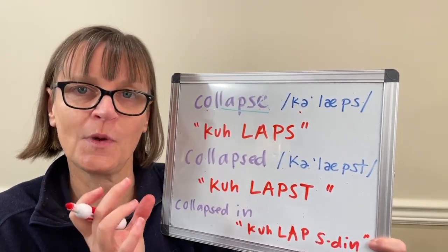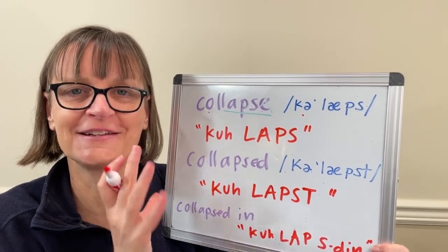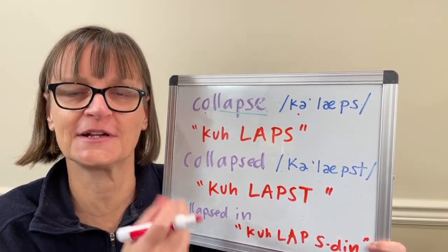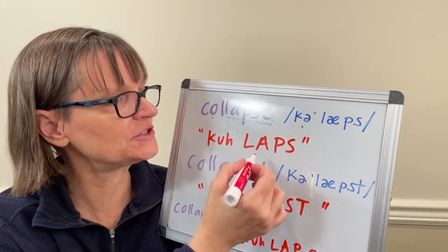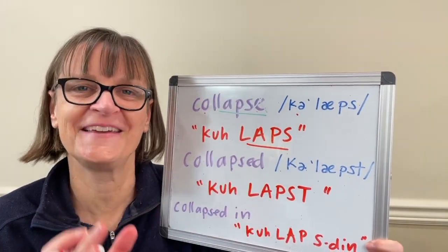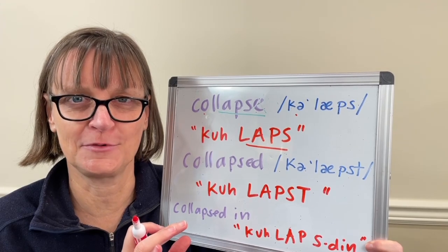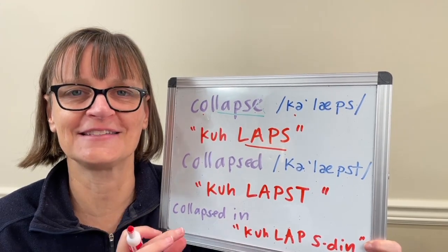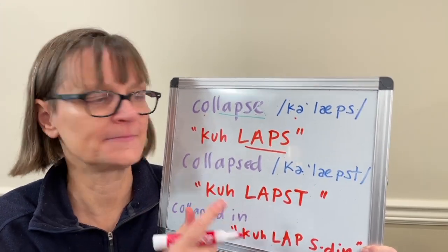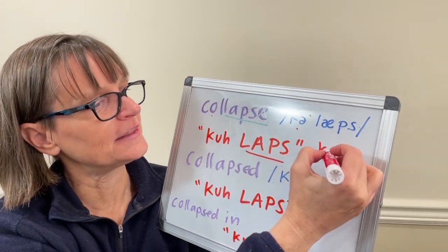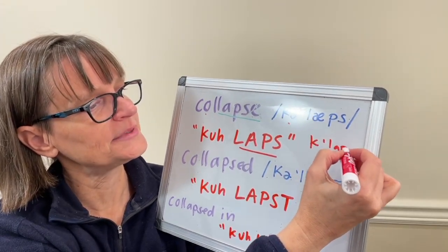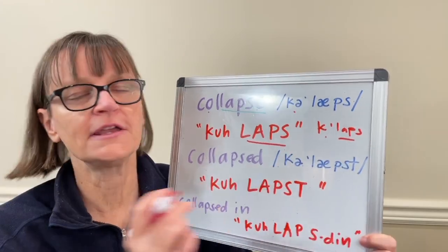One way that you can get that vowel correct and get the rhythm of the word and the vowel sounds correct is by starting on the stressed syllable — lapse — then add your first unstressed syllable back. That sounds like: lapse... collapse. Sometimes I even write it like this: collapse, with no vowel here.